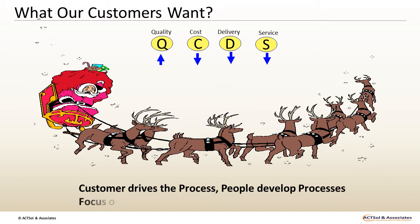People develop the processes and hence the focus needs to be on process quality. Let us understand the first attribute, Quality. The other three — Cost, Delivery, and Service — are all connected to quality. In quality, we focus on two aspects: the stated needs and the implied needs.